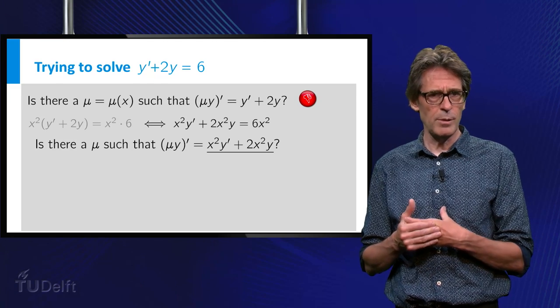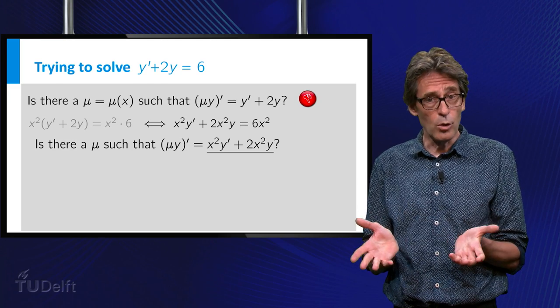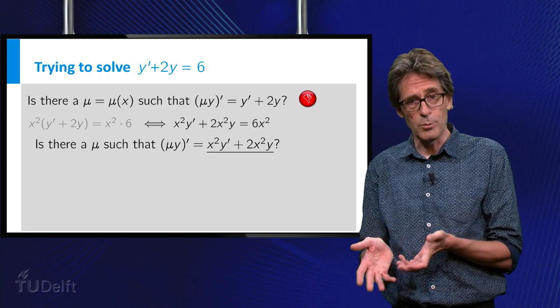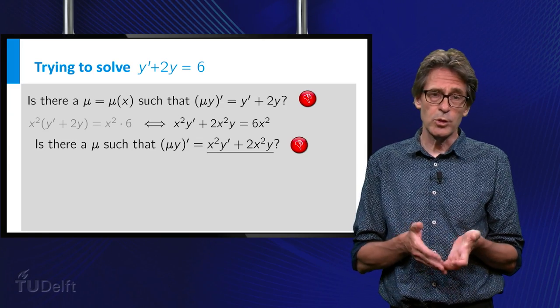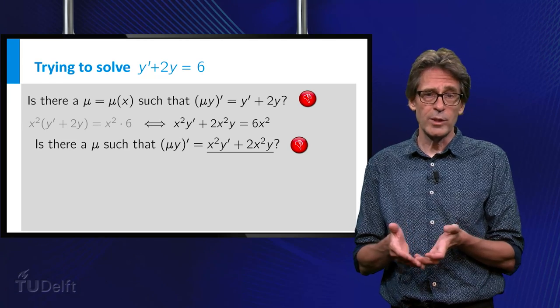If so, you are smarter than me. There is again no mu, such that the derivative of mu times y is equal to x squared y prime plus 2x squared times y.